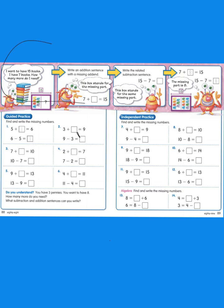If you look up here this kind of helps you to know what you're supposed to do. I want to have 15 books. I have 7 books. How many more do I need? You can think of it as a part-part-whole mat with a missing part. So you have your 7 here and you know that you have 15. How many more do you need to draw to get to 15?